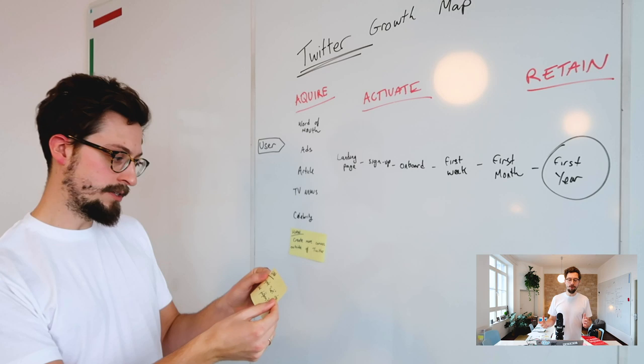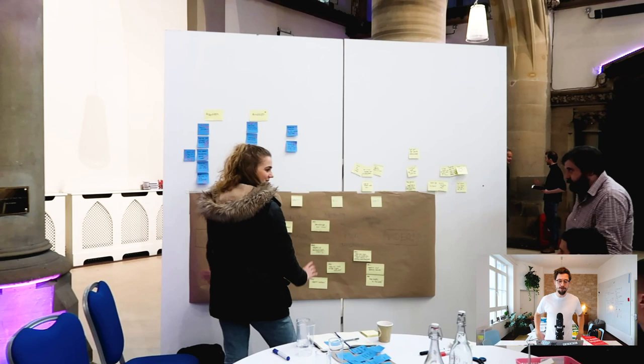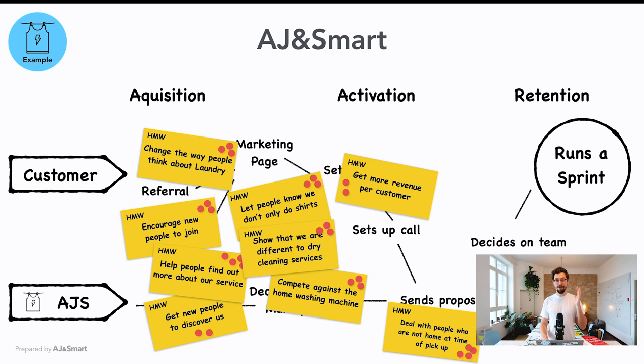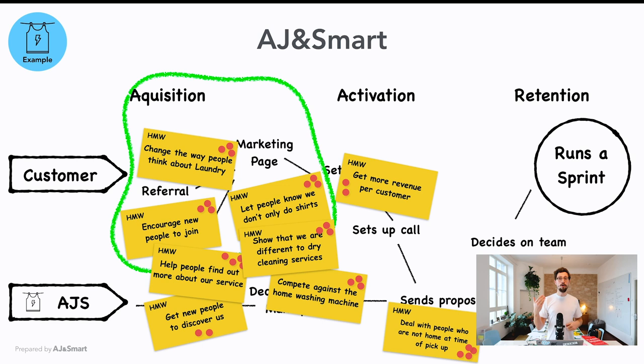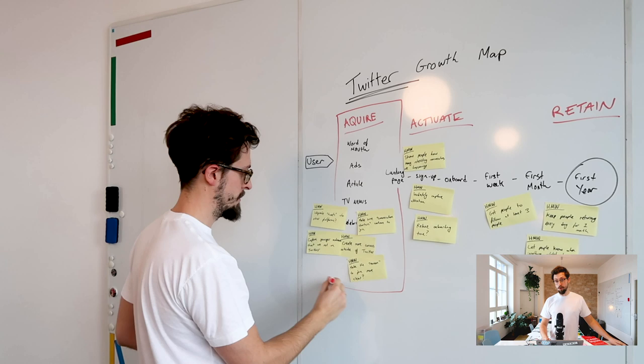You start to see a cluster of problems in certain areas of the map. The next step is to create a target area — for today, we're only going to focus on one lever. So in this example, we're only going to focus on acquisition. Now you've got a target area your team is going to work on for this workshop. I'd really recommend working on just one growth lever at a time, because there are still quite a few exercises to come and people will get a little tired.